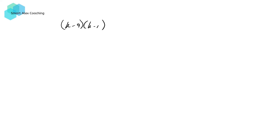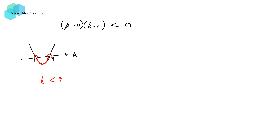To solve this quadratic inequality, the method I recommend is to do a quick sketch of the graph. We have k minus 9 times k minus 1 less than zero — this is a parabola with the horizontal axis now being k, and roots at 1 and 9. We're interested in the section of the parabola that is less than zero, meaning below the horizontal axis and not equal to zero. That gives us k strictly between 1 and 9, which is the solution to the question.